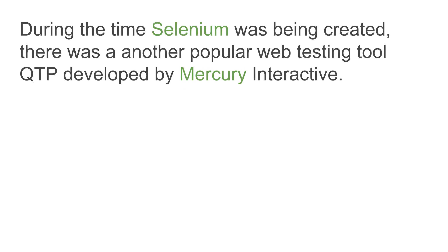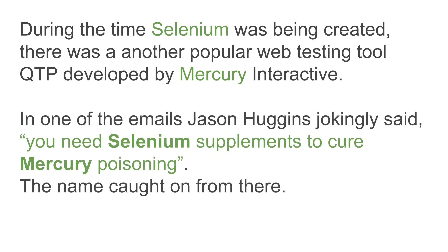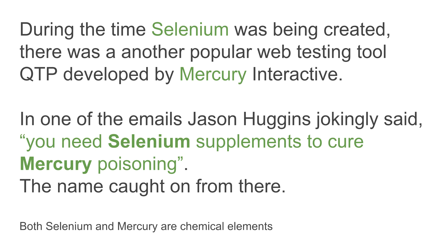Why was Selenium named so? During the time Selenium was being developed, there was another tool called QTP being developed by Mercury Interactive — and mercury is a chemical element. In one of the emails, Jason Huggins jokingly said that you need selenium supplements to cure mercury poisoning. The name caught on from there, and the tool became known as Selenium.